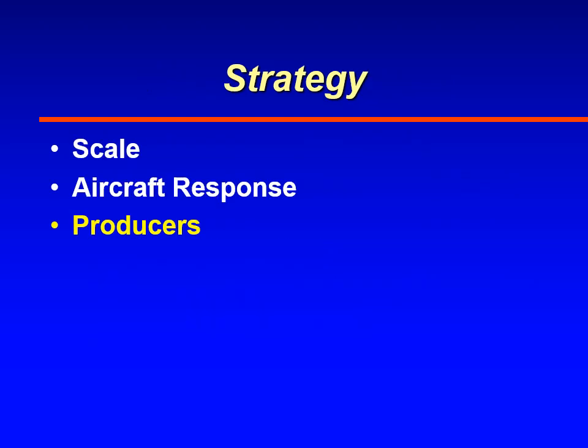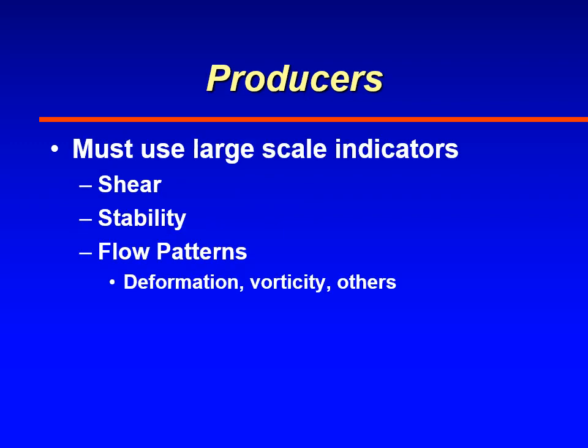Another element that must be considered in your strategy for turbulence avoidance is the weather that is producing the turbulence. This occurs on scales much smaller than what our numerical models can simulate, so we must look at large-scale indicators to get an idea of where turbulence can be expected. These large-scale indicators include wind shear, atmospheric stability, and flow patterns — things we call in meteorological terms deformation, vorticity, and other kinematic features.